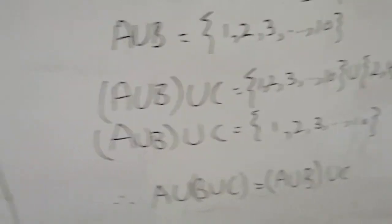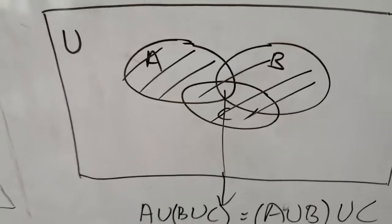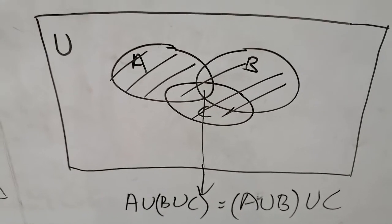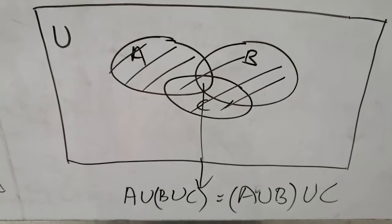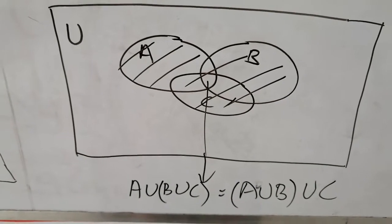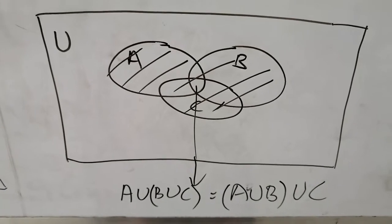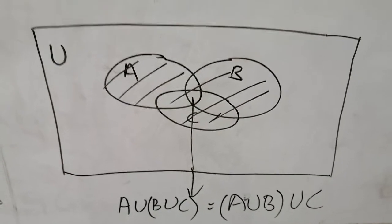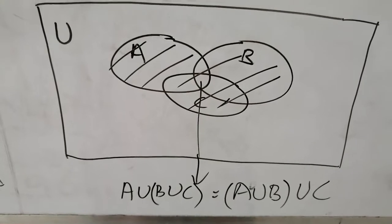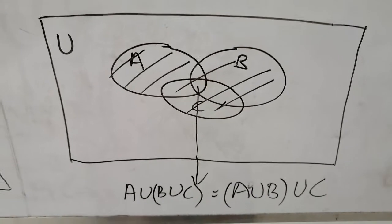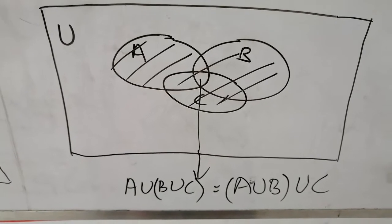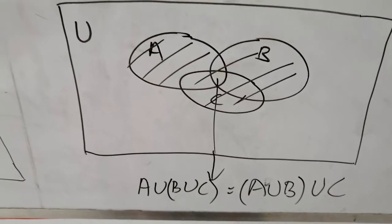We have verified both sides are equal. Representing this with a Venn diagram, we have three overlapping sets A, B, and C. For the union, we highlight all elements of all three sets together. This completes the Venn diagram representation of the associative property for union.